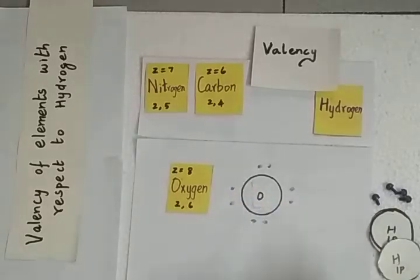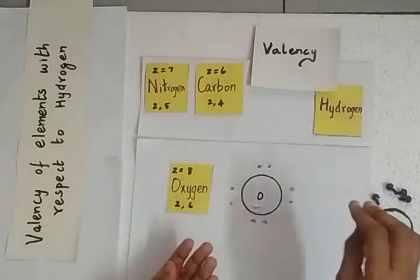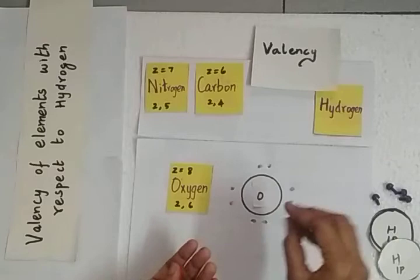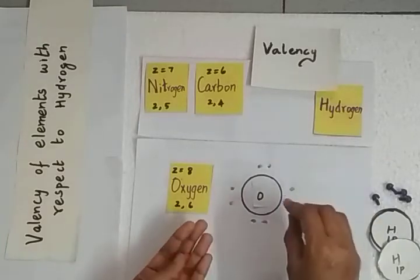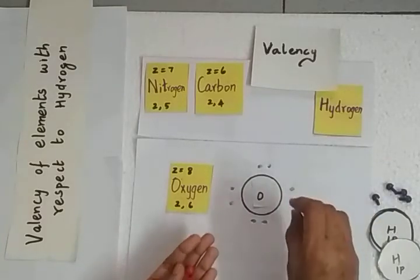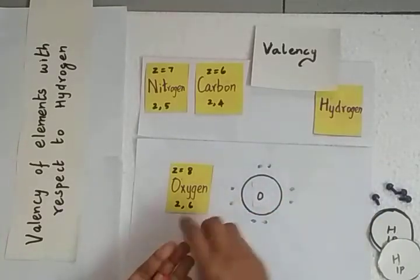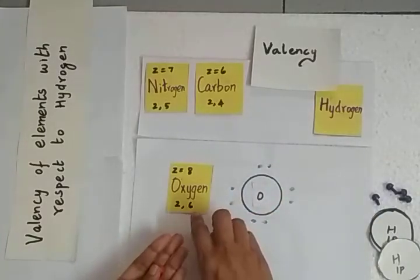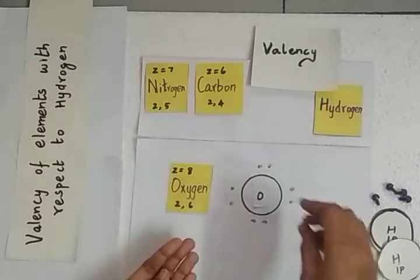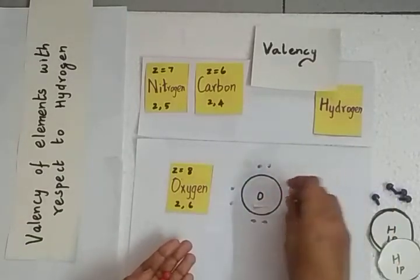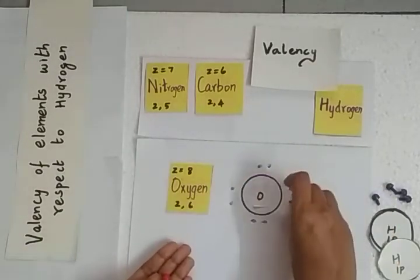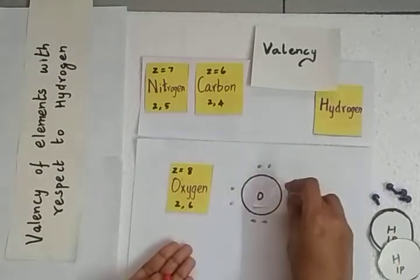I am using red beads to represent only the valence electrons, just like the Lewis dot formula that is used to represent valence electrons — which you will learn in detail in higher classes. So we have 6 valence electrons represented with red beads.